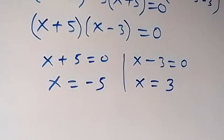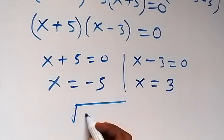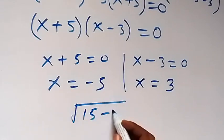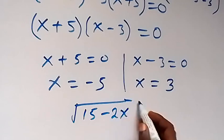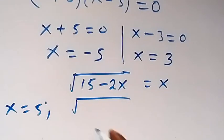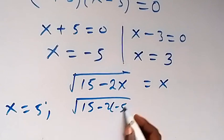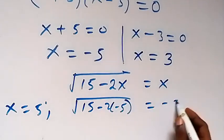Now let's check to see which one of these satisfies the given problem, which is square root of 15 minus 2x equals to x. For x equals to minus 5, this becomes square root of 15 minus 2 times minus 5, which equals to minus 5.